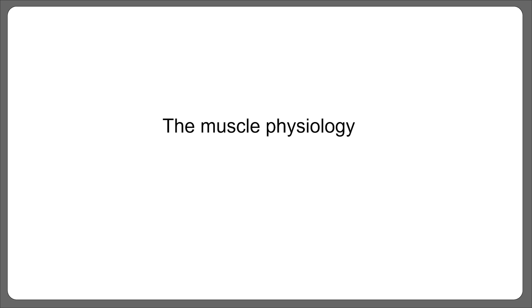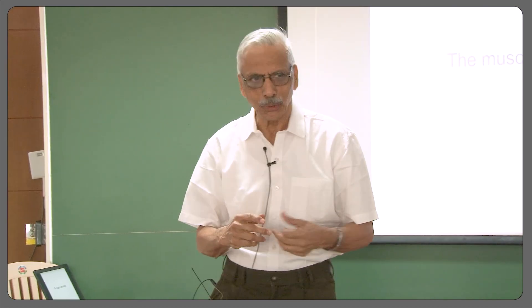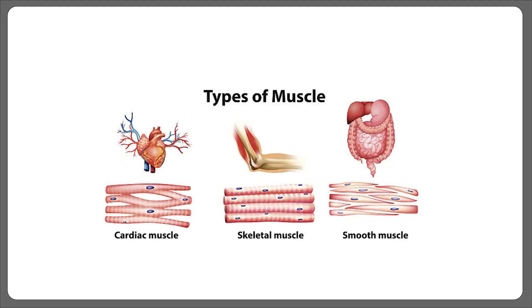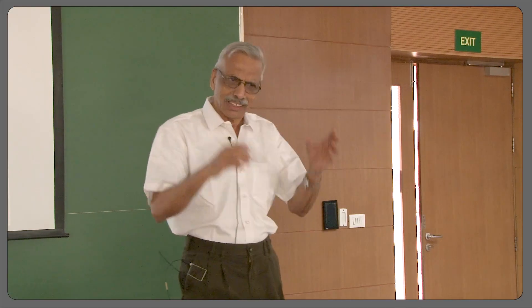Why do we need muscles? Because we have to interact with the environment and we need to move — this is a mechanical necessity. Nature has provided us with one system which we call muscle physiology. We've covered this in school: there are three different kinds of muscles. At the heart of everything there is actin and myosin, and the sliding of the two filaments on one another.